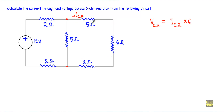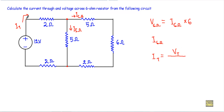Therefore I6Ω will be the branch current of this branch — let's say the current flowing through this branch is I5Ω. To calculate I6Ω, I first have to know the total current IT supplied by the source, because I6Ω will be a portion of the total current. To calculate IT, I need the total voltage VT and the total resistance RT. So the order of analysis is: calculate RT, then IT, then I6Ω, then V6Ω.